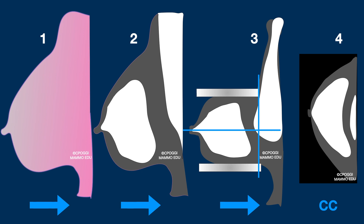Here I tried to show you what a proper position would look like if we could see what's inside the breast and thorax before acquisition. One: breast as it looks from a lateral point of view. Two: if we could see right through it. Three: as the breast should look after positioning and compression. Four: to get the correct image in CC projection.